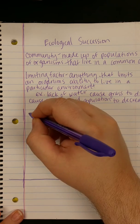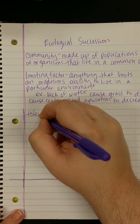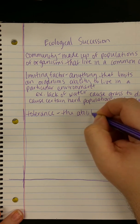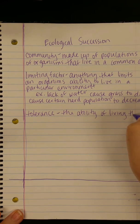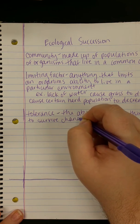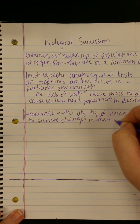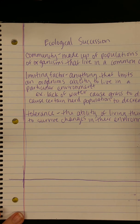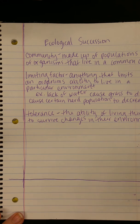Our last vocab word is tolerance — the ability of living things to survive changes in the environment. For instance, some plants have been bred to be drought tolerant, meaning those plants can survive without water for a longer period of time than the same plant that hasn't been bred with that trait.